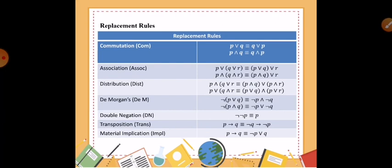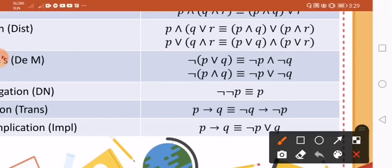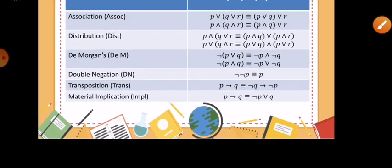Next one is the double negation. The double negation will suggest that you go back to your original proposition — a not-not P. The double negation will cancel one another, so it is logically equivalent to the proposition itself. Next is the transposition. If we have P implies Q, they are logically equivalent if we retain the implication but the hypothesis becomes the conclusion negated, and the conclusion becomes the premise negated. So it is logically equivalent to not Q implies not P.